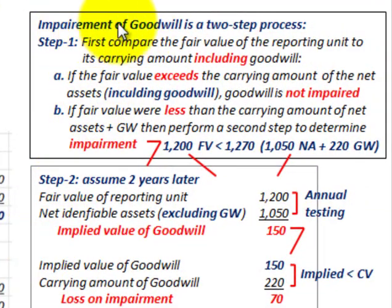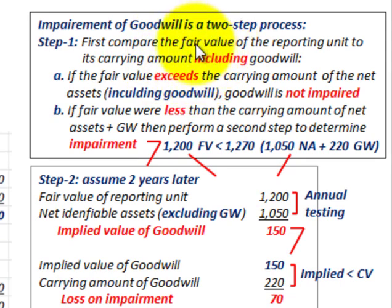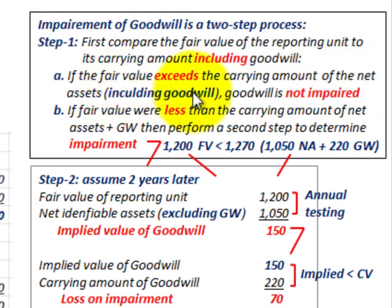Impairment of goodwill is a two-step process. Step one: compare the fair value of the reporting unit to its carrying amount, including goodwill. We reassess the fair value and carrying amount each year. If the fair value exceeds the carrying amount of net assets including goodwill, then goodwill is not impaired. But if the fair value is less than the carrying amount of net assets plus goodwill, then you perform the second step to determine the impairment.